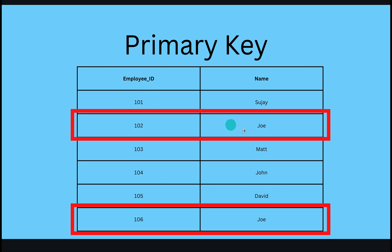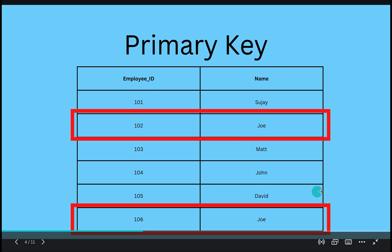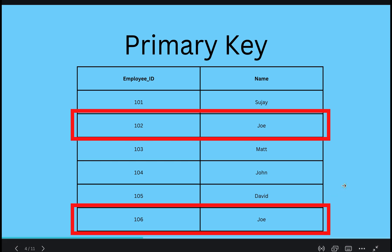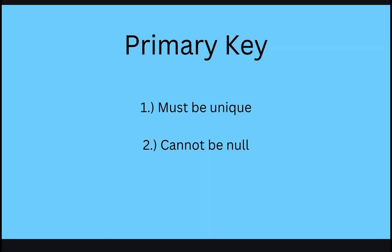As you'll notice, there are two employees named Joe and Joe — they have the exact same name. So how do you really differentiate or uniquely identify these two employees? The way to uniquely identify them is with the help of the employee ID, which means in this case the employee ID is the primary key.